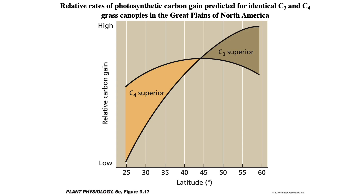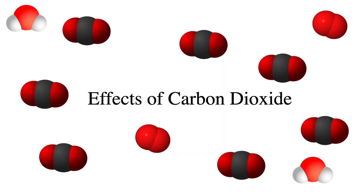On the y-axis is relative carbon gain, and on the x-axis is latitude. We can see that at lower latitudes, C4 plants are superior — presumably in warmer climates — and C3 plants are superior at higher latitudes where cold climates predominate. Now let's look at the effects of carbon dioxide on photosynthesis.